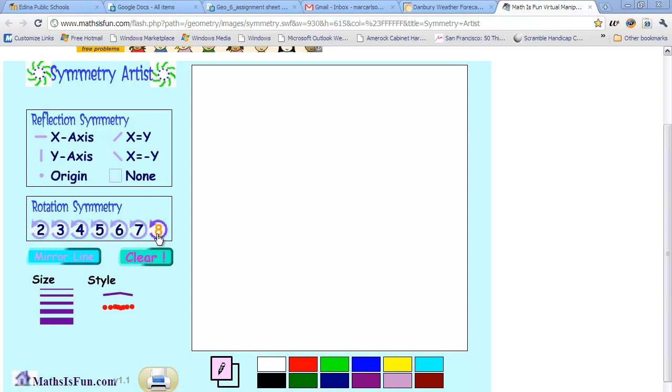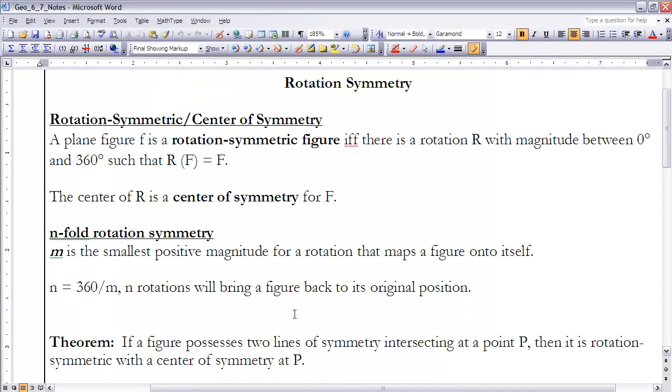Let's go back to our notes before we actually create a rotation symmetric figure and talk about what these particular numbers represent. We will generally refer to that number as the n number, or n-fold rotation symmetry. When we talk about reflection symmetry, we talk about how many lines of reflection it has. With rotation symmetry, we're talking about how many times can I turn it onto itself until we're back to our original position.